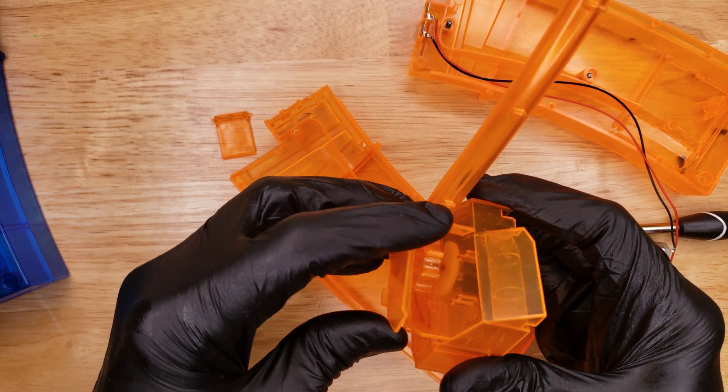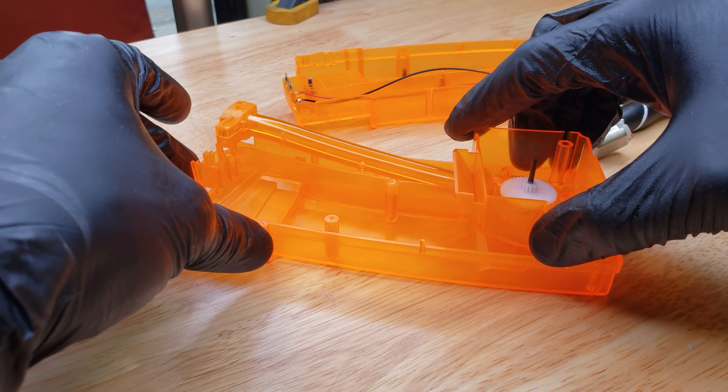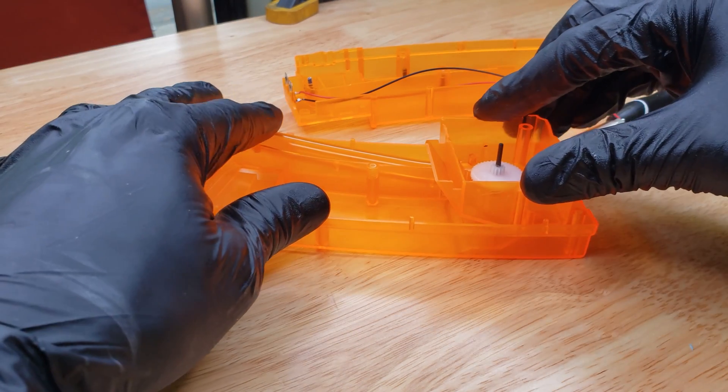Cover plate wants to pop off all the time. So just get that together, put it back down inside the magazine half.